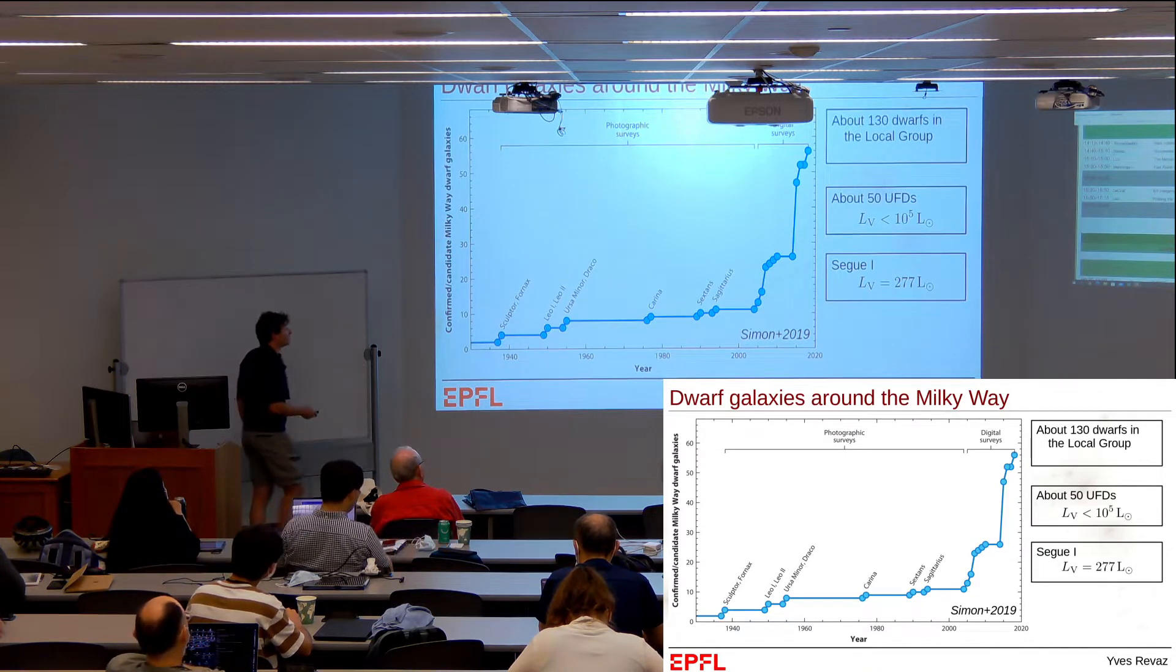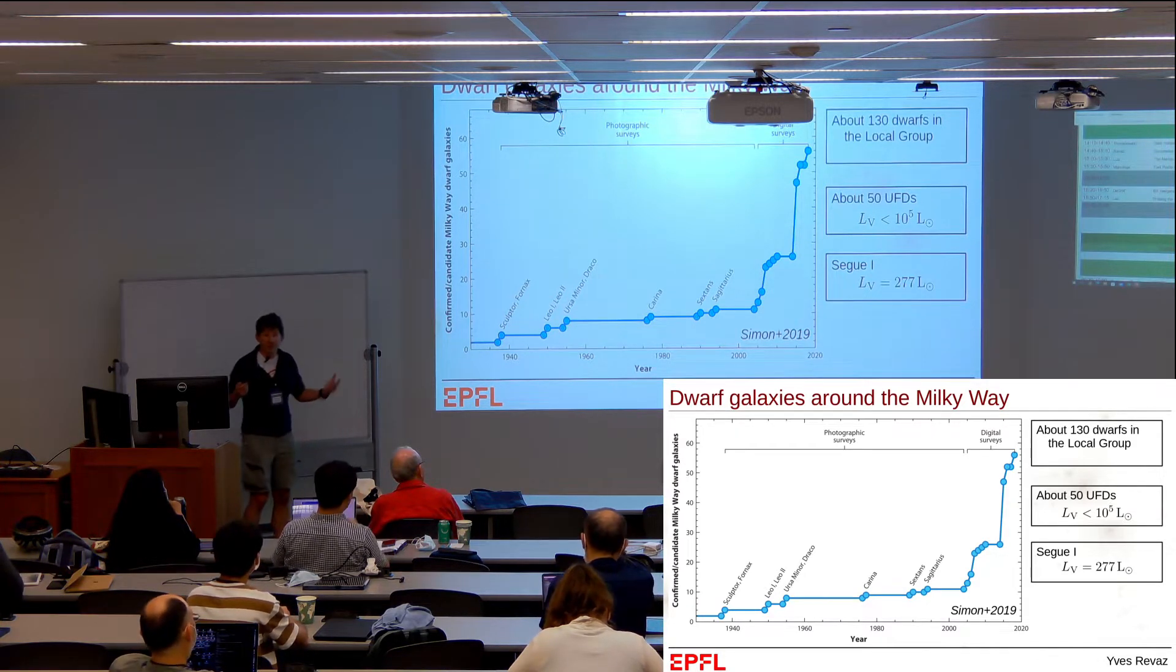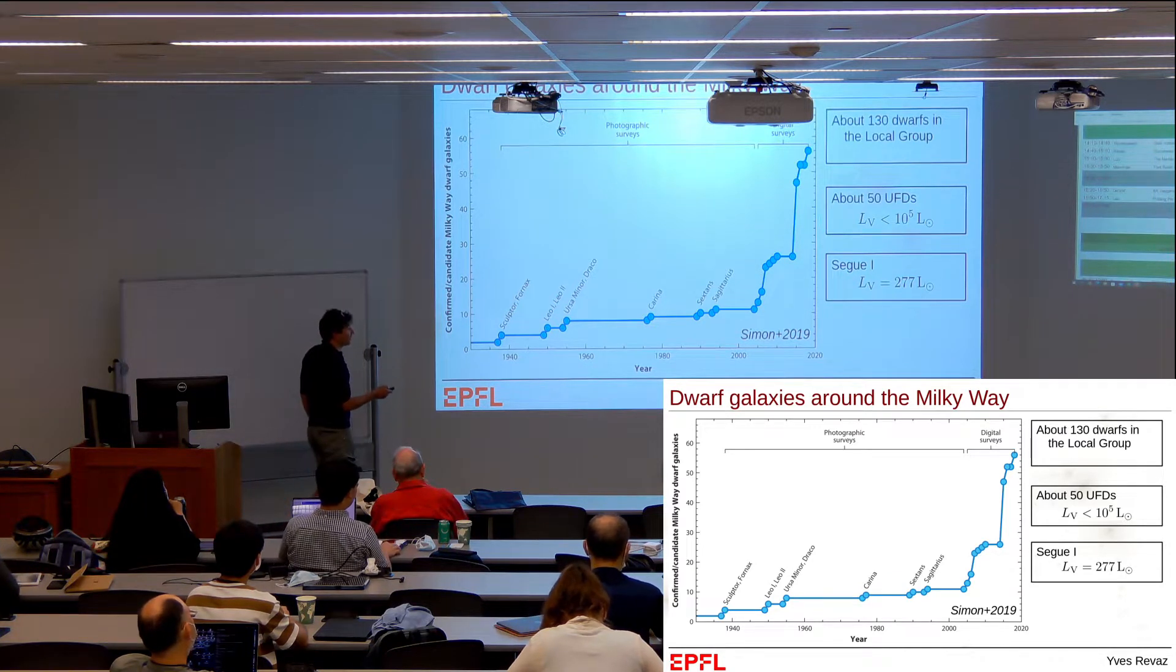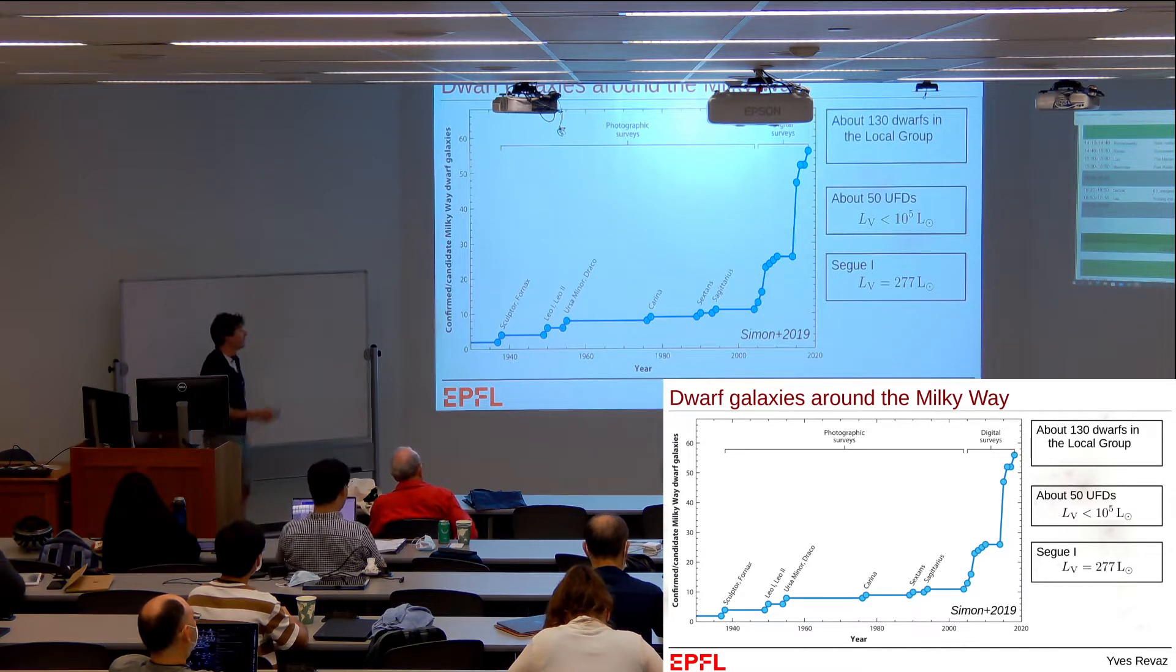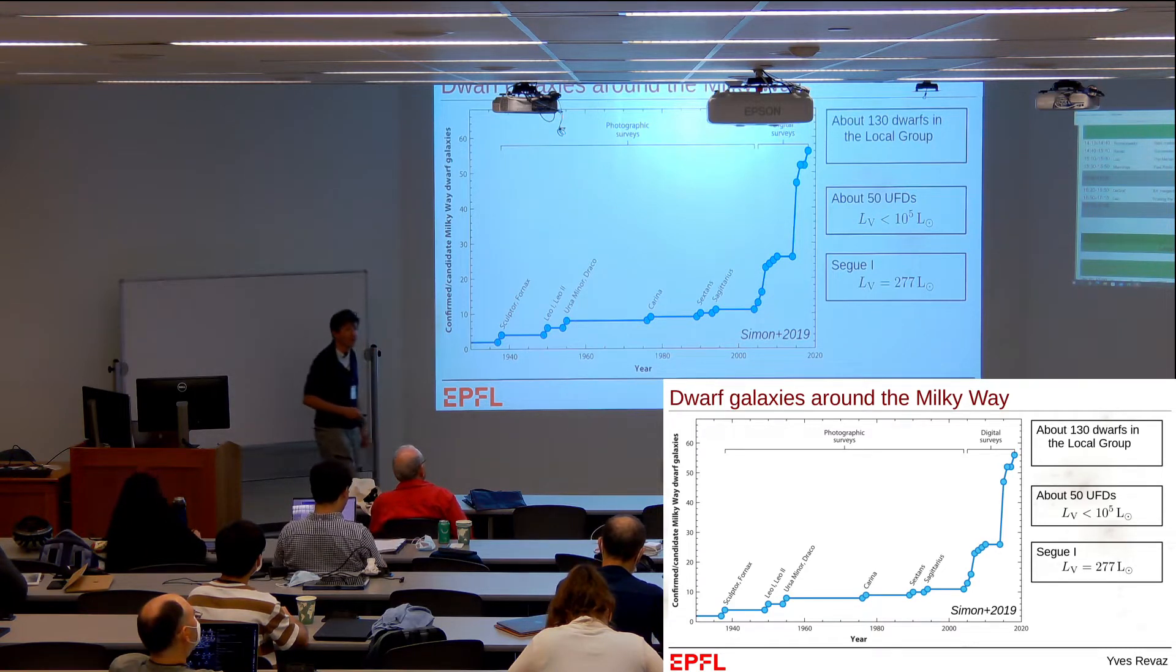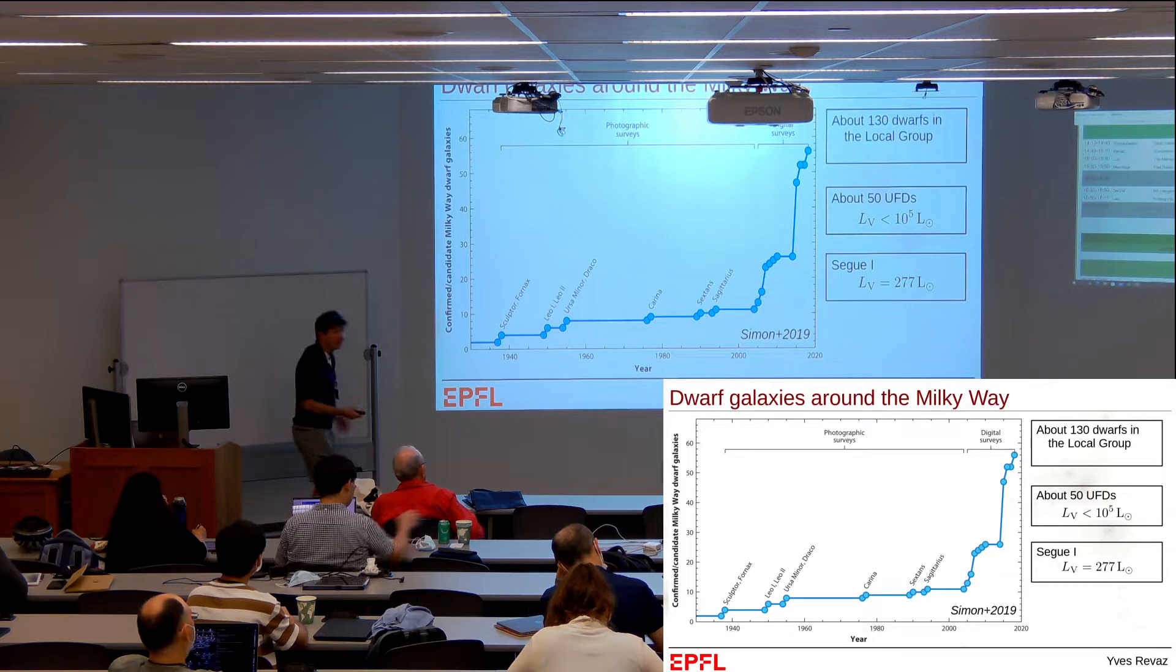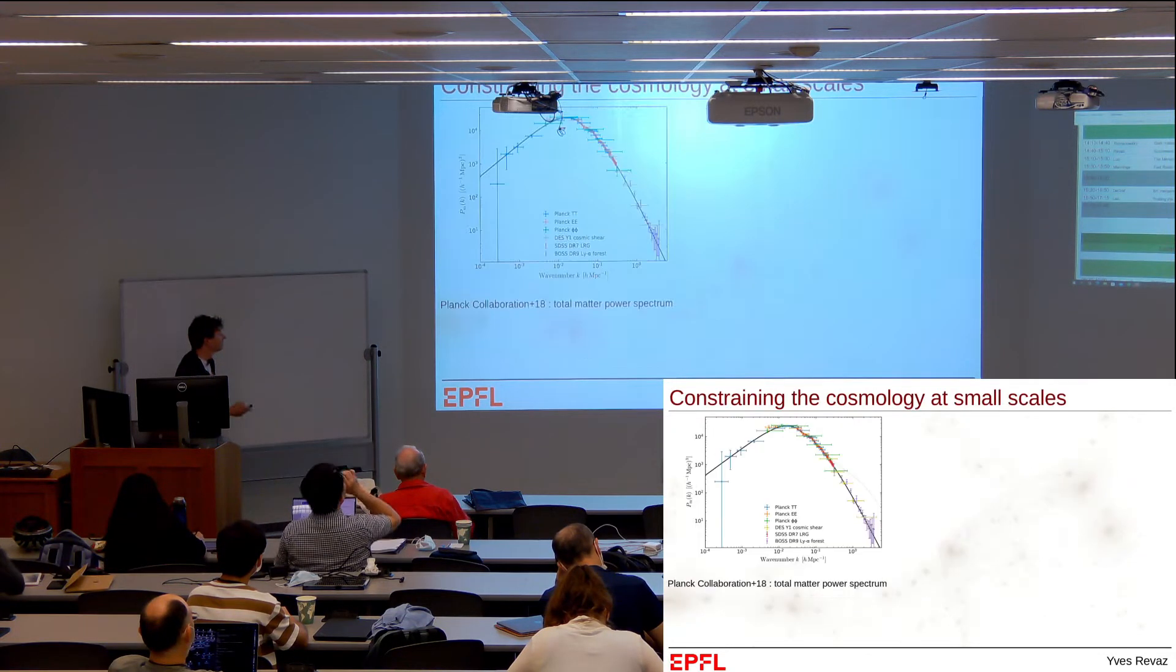Among these populations, there's a very interesting population discovered about 15 years ago: the so-called ultra-faint dwarf galaxies. We have now nearly 50 of those galaxies observed, characterized by very low luminosity below 10 to the 5. The faintest is Segue I, with only 200 solar luminosities.